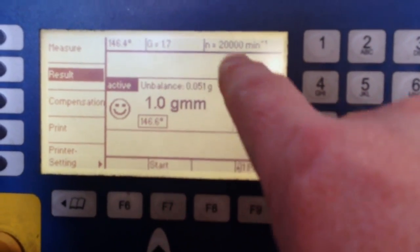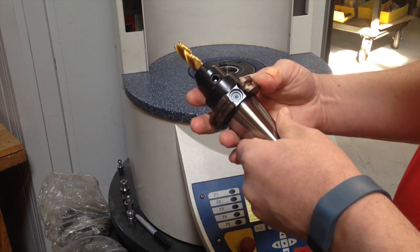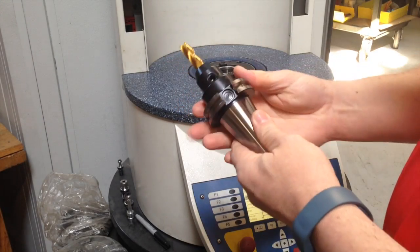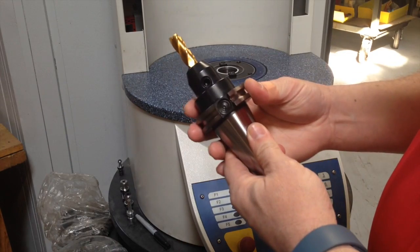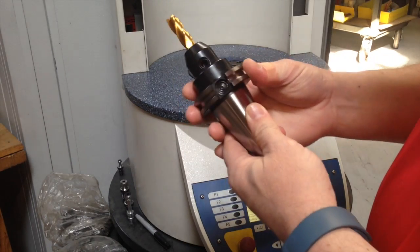This is a competitor's holder. They advertise that this holder is balanced to 10,000 RPMs, but they don't give a G rating.